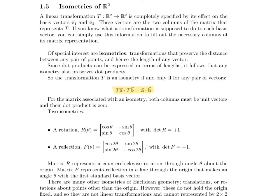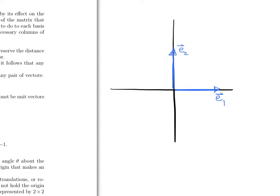The first type of isometry you'll be responsible for is a rotation matrix. If we want to rotate vectors, the matrix representation is a counterclockwise rotation through angle theta about the origin. Let's make sense of why the rotation matrix looks the way it does. We want to see what a counterclockwise rotation through angle theta does to each of the standard basis vectors in R2.